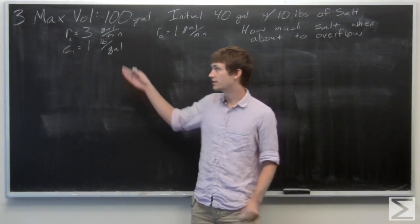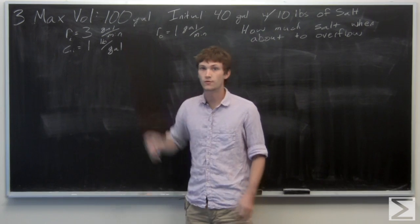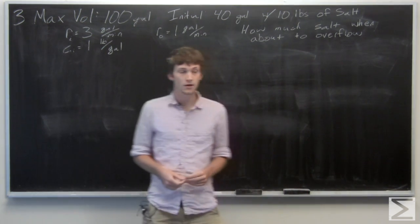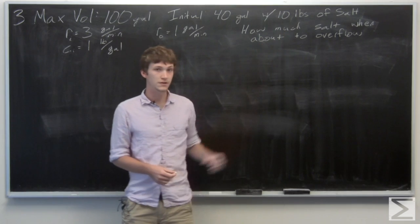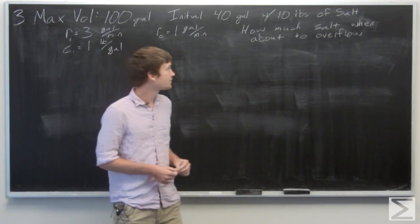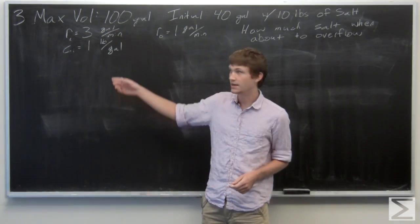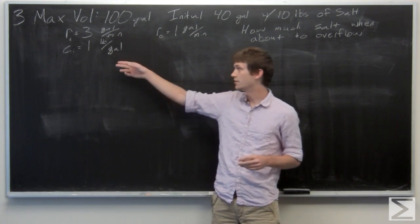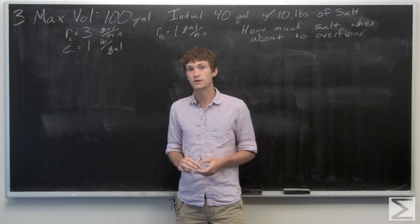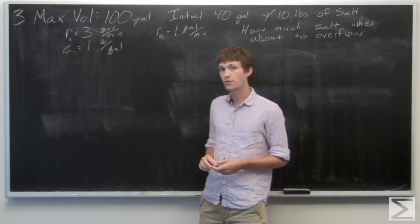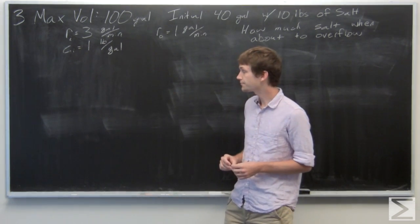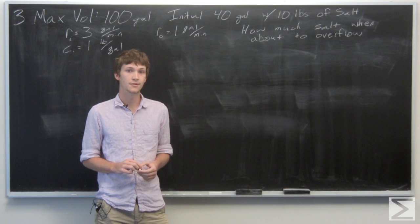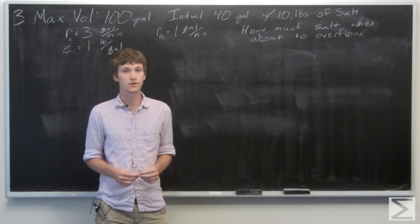In this problem we're given a tank that has a max volume of 100 gallons. Initially there are 40 gallons of water and 10 pounds of salt. The rate into the tank is 3 gallons per minute with a concentration of 1 pound per gallon of salt, and the rate out of the tank is 1 gallon per minute. We want to know how much salt will be in the tank when it is about to overflow.